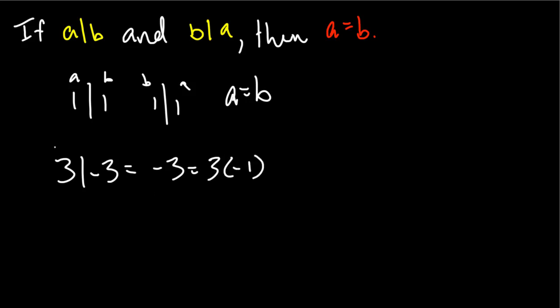Likewise, we'll say that 3 is our A and negative 3 is our B, and now down here, we'll have that negative 3 divides 3. We know this is true. We know that we could rewrite 3 is equal to negative 3 times negative 1. But notice that A does not equal B and B does not equal A. We have found a counterexample for this statement, and we're done.